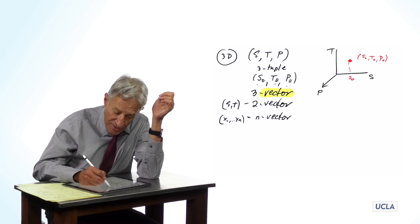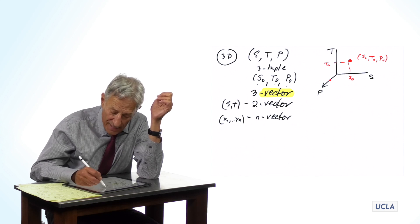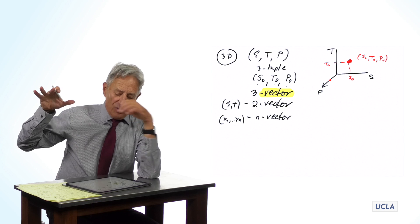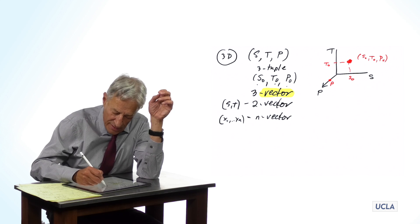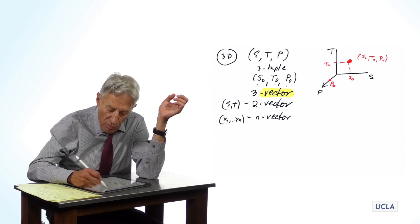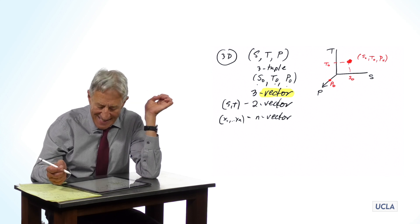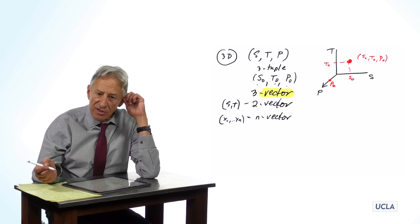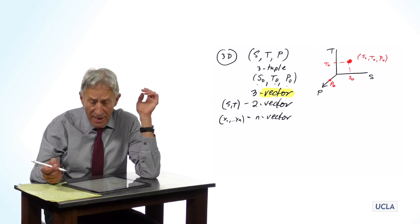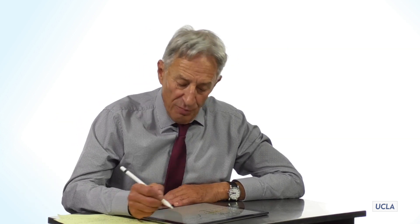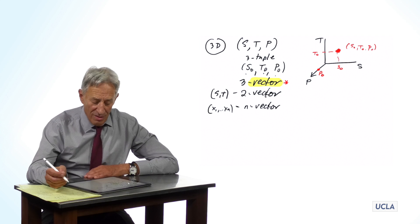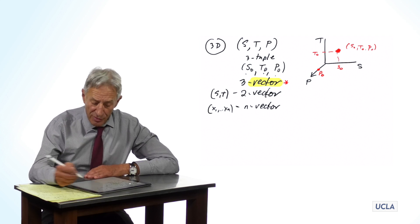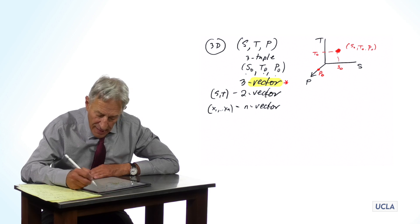is a certain number of sharks and a certain number of tuna. And you have to imagine now this point is out off the surface of the tablet here. It's going to have a projection onto P, and that's P0. And so a point in the three-space S, T, P represents the number of sharks and the number of tuna and the number of plankton at a point in time.